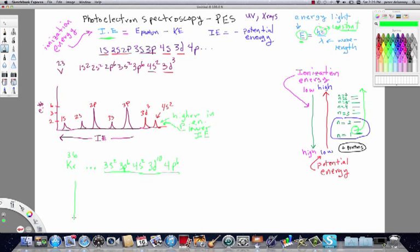Now if we look at the PES scan, see if I can get a straighter line out of that. Okay, so again, this is number of electrons.